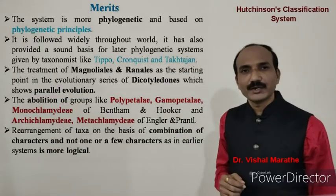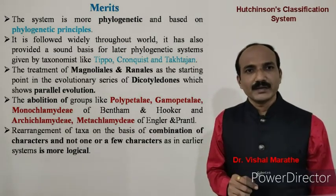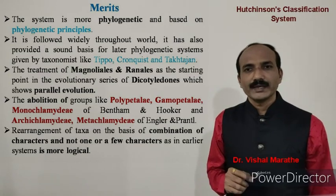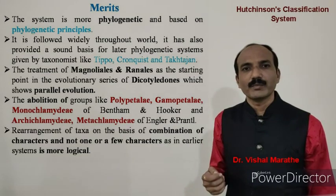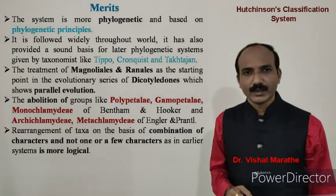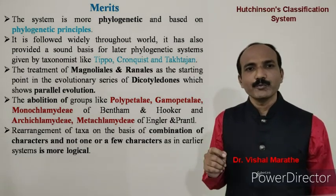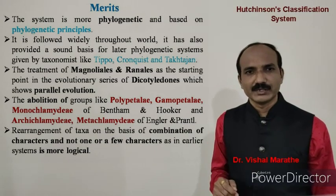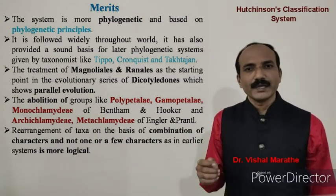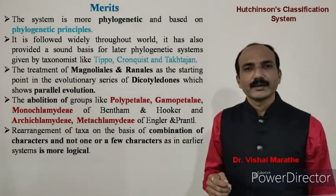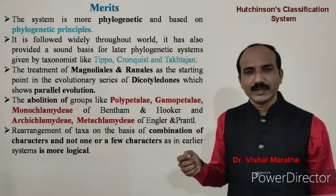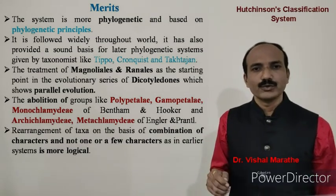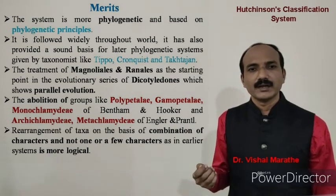Now switching to the merits and demerits of this classification system. The first merit is that the system is more phylogenetic and based on phylogenetic principles. It is followed widely throughout the world. It also provided a sound basis for later phylogenetic systems by taxonomists like Tippo, Cronquist, and Takhtajan. The treatment of Magnoliales and Ranales as the starting point in the evolutionary series of dicotyledons, showing tabular evolution, is another important merit. The abolition of artificial groups like Polypetalae, Gamopetalae, and Monochlamydeae of Bentham and Hooker, and Archichlamydeae and Metachlamydeae of Engler and Prantl, is also a notable feature.